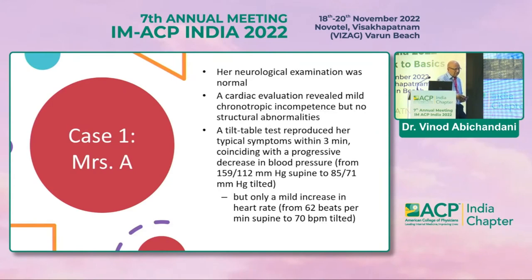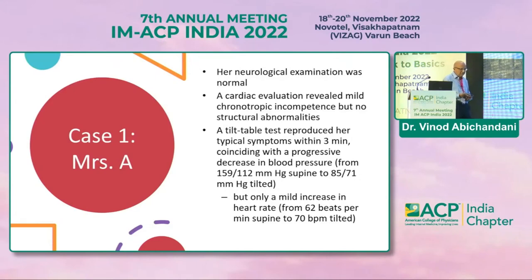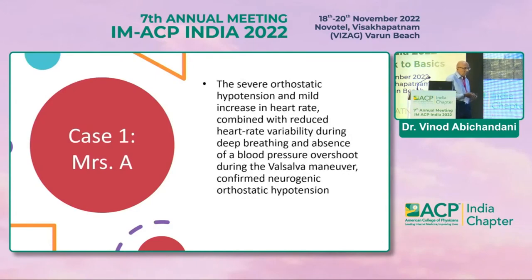The tilt table test showed a progressive decrease in blood pressure from 159/112 mmHg supine to 85/71 mmHg when fully tilted, accompanied by only a mild increase in heart rate from 62 to 70 beats per minute. The severe orthostatic hypotension combined with mild heart rate increase, reduced heart rate variability during deep breathing, and absence of a blood pressure overshoot during the Valsalva maneuver confirmed neurogenic orthostatic hypotension.